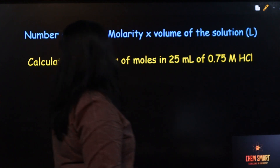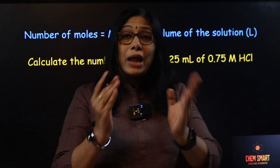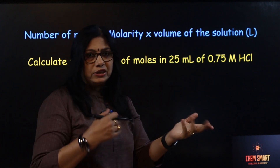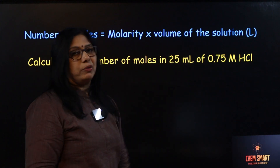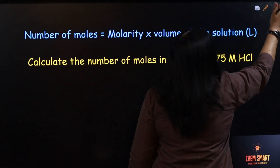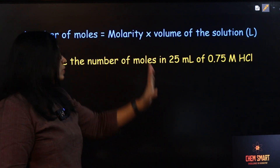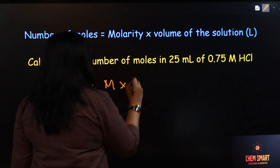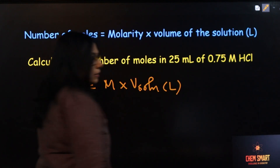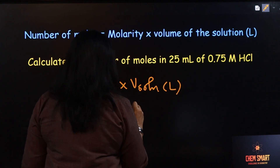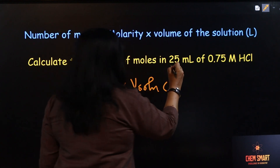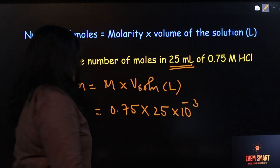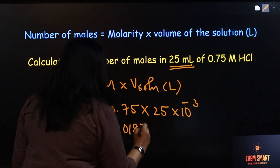The last formula: number of moles equals molarity of the solution multiplied by volume of the solution in liters. This is derived from the molarity formula. For example, calculate the number of moles in 25 ml of 0.75 molar HCl. Here there is a trap — the volume is in milliliters, so you convert it to liters: 25 ml ÷ 1000. So number of moles = 0.75 × 0.025 = 0.01875 moles.